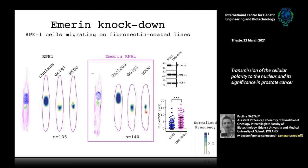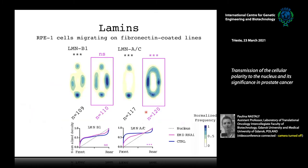I prepared protein distribution maps in mock cells and emerin knockdown conditions. Some proteins did not change between conditions — lamin B distribution was the same — whereas lamin AC dramatically changed its distribution upon emerin knockdown.